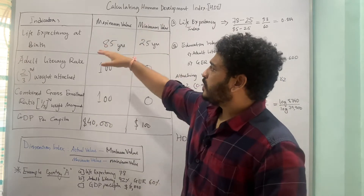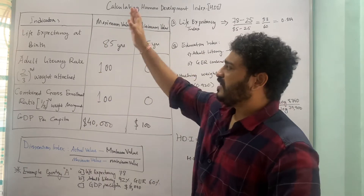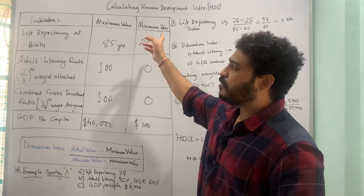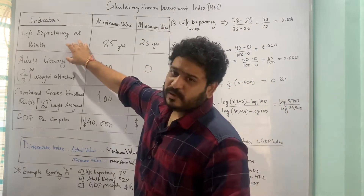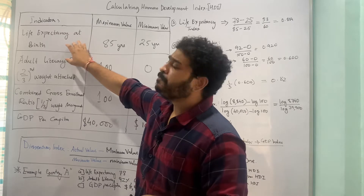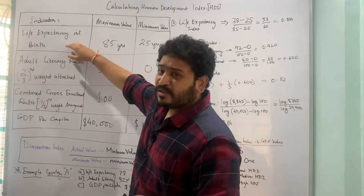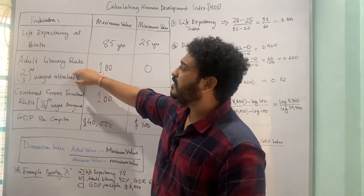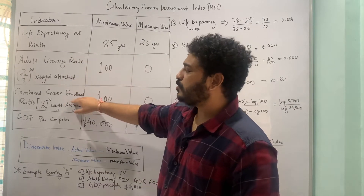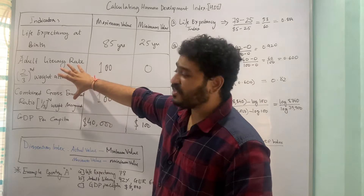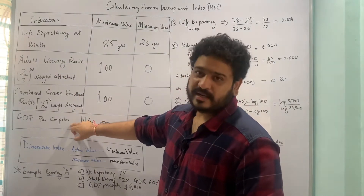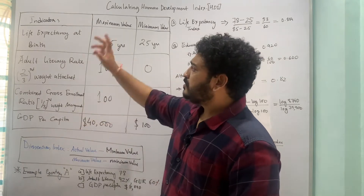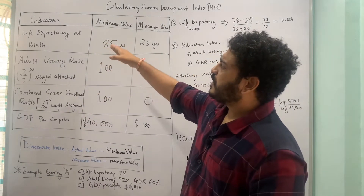You can see that the table is talking about indicators in the first column and the maximum and minimum values in the subsequent columns. The indicators in the human development index are three social indicators: life expectancy at birth, the adult literacy rate, and the combined gross enrollment ratio — also called the education index — and one economic indicator, which is the GDP per capita in dollar terms.